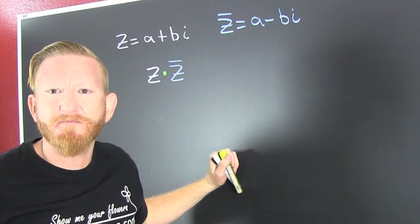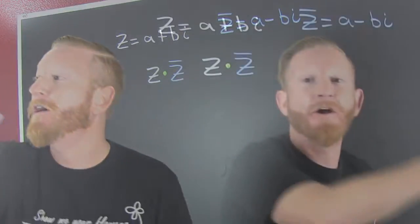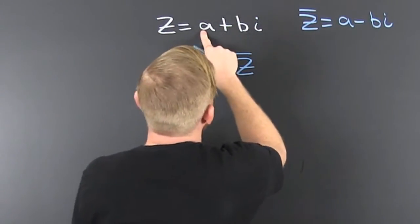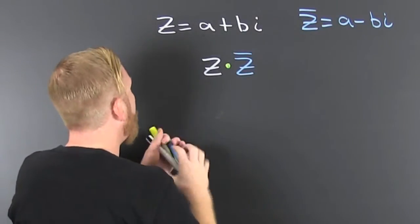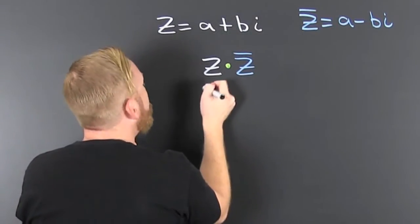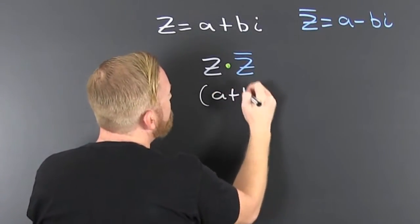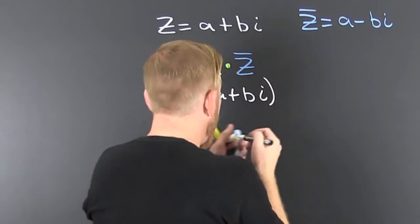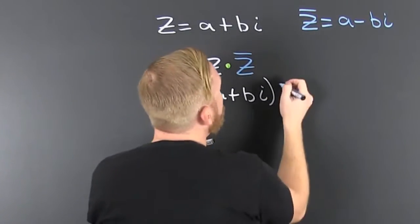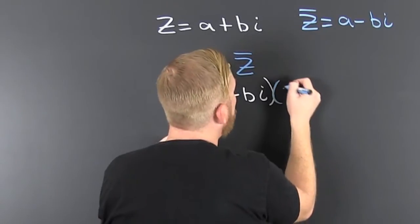That is not the complement. What do we want to do? We want to multiply z times z bar. So then we see if we put z equals a plus bi and we multiply it by its complement z bar equals a minus bi.